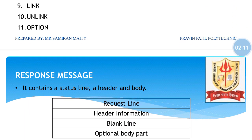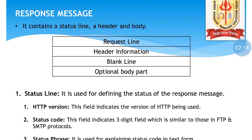The response message consists of the same format as the request message: request line, header information, blank line, and an optional body. The status line is used for defining the status of the response message — whether it is about to be received or about to reach, indicating the status of the packet. The HTTP version field indicates the version being used, for example 1.1 or 1.0.